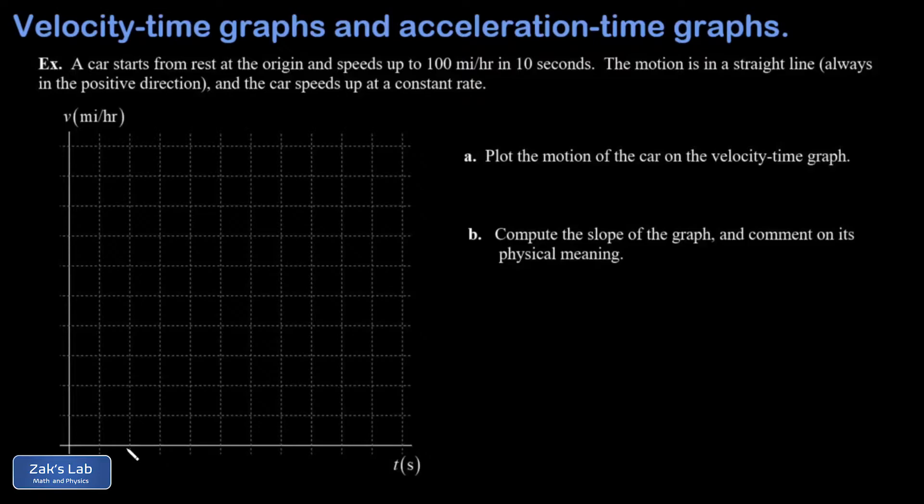And a point on this velocity-time graph has two coordinates. The first one is what time is it in seconds, and then the second coordinate is what's the velocity in miles per hour. So if I look at a time of t equals zero, I'm told that the car was at rest at that moment in time, and I get my first point on the velocity-time graph. It's just the origin because the car was at rest when we started the clock.